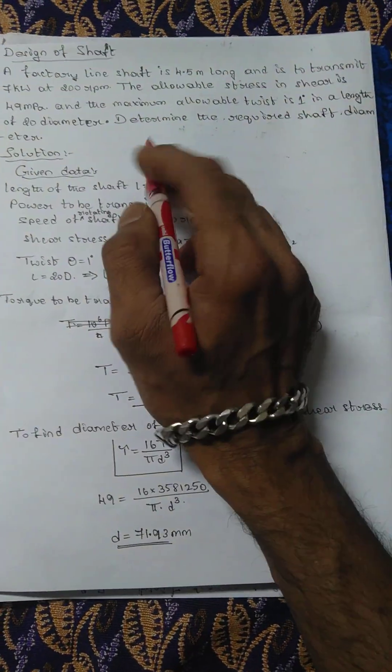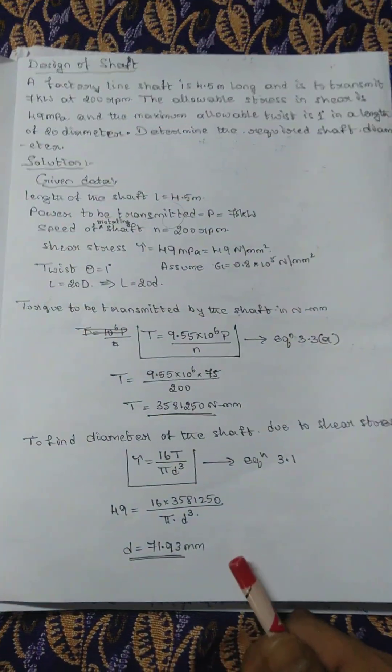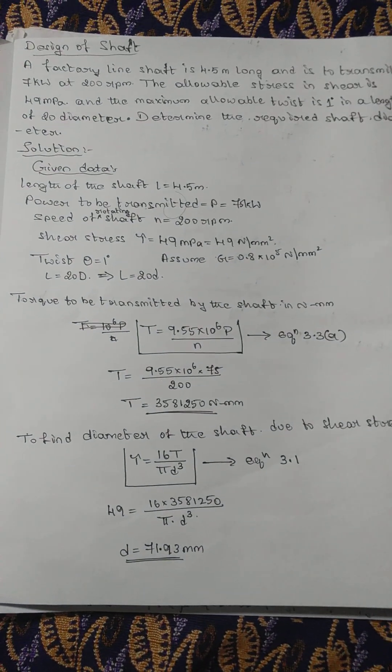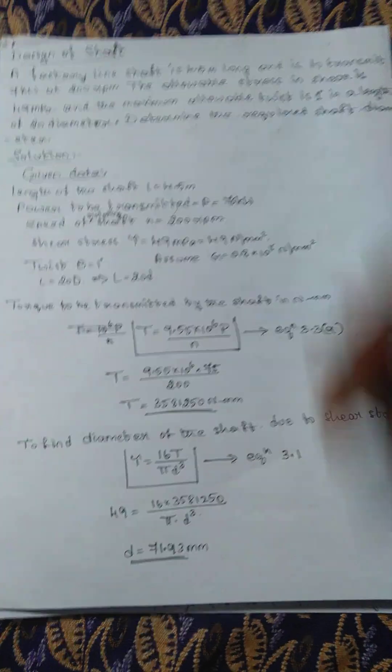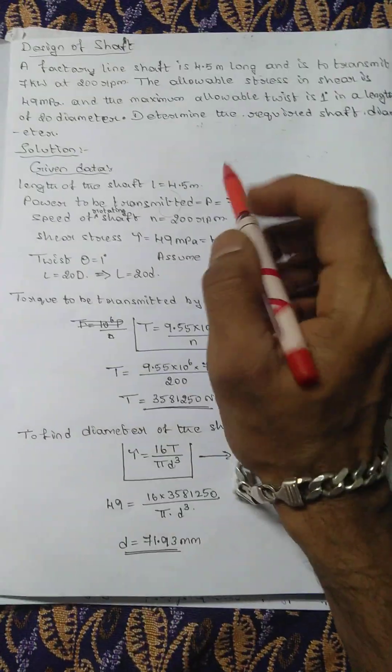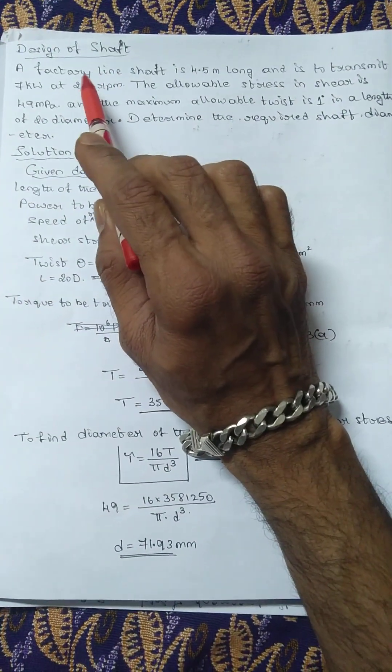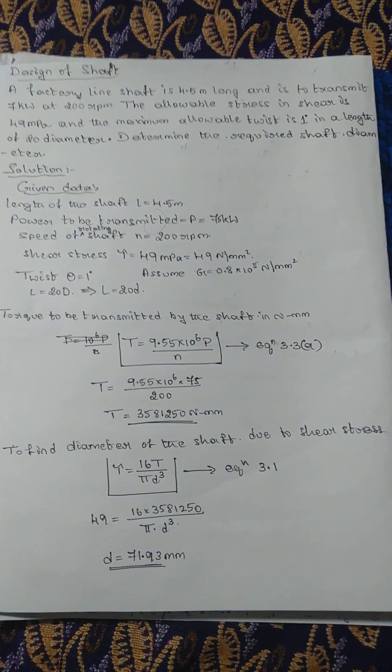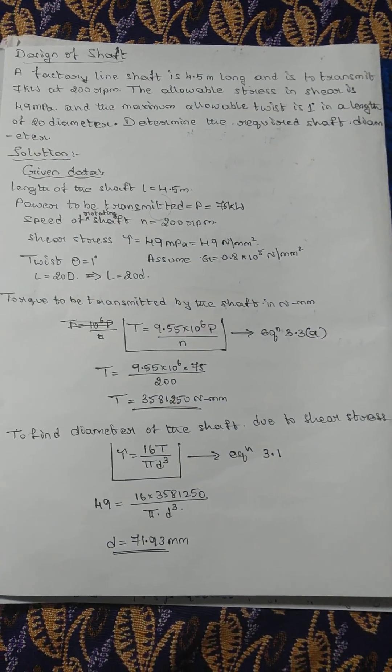Hello friends, today I'm solving a problem from the chapter Design of Shaft, related to Design of Machine Elements. Let us start with the problem. A factory line shaft is 4.5 meters long and is to transmit 7 kilowatts at 200 rpm.